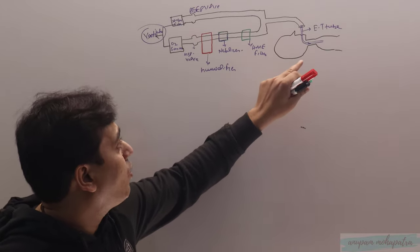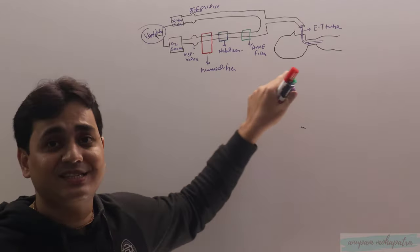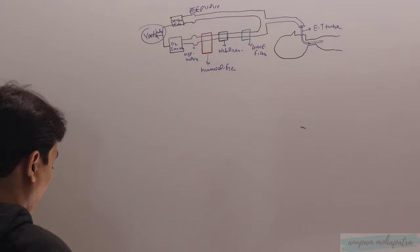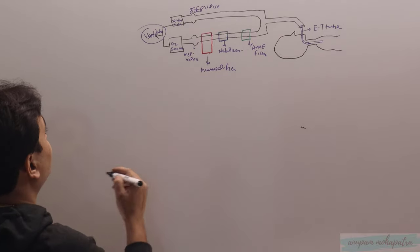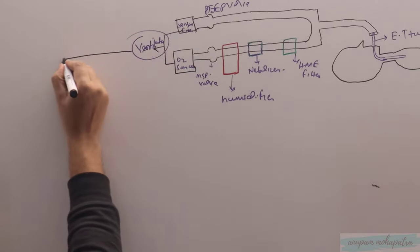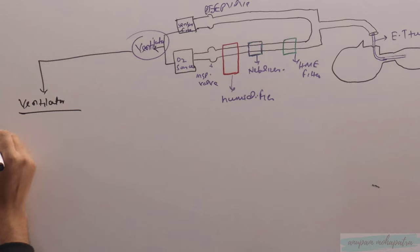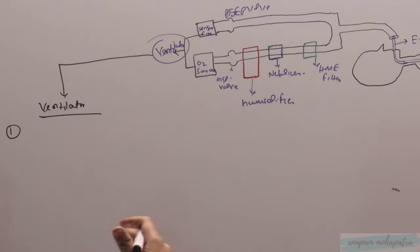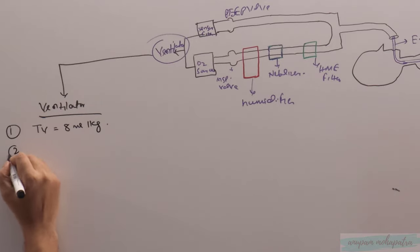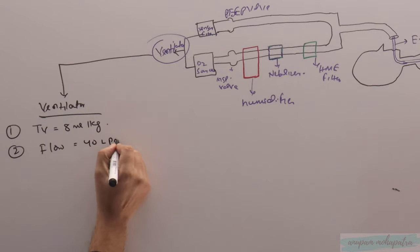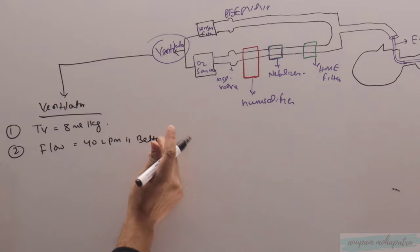Now we'll discuss the factors that decide efficient nebulization. First, we'll come to the ventilator part - what are the optimal ventilator settings you have to prepare? Because you have to deliver the aerosol, you have to have adequate volume of air. So tidal volume has to be 8 ml per kg, and flow has to be minimum or moderate - 40 liters per minute is better.